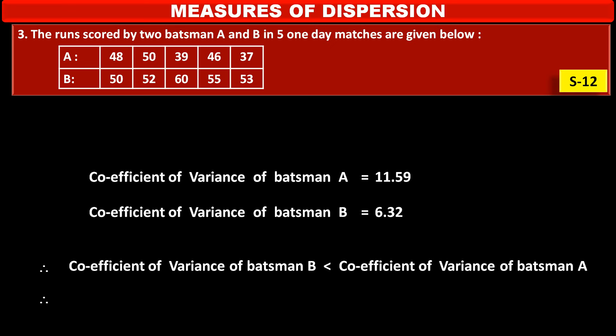Therefore, batsman B is more consistent because its coefficient of variance is smaller than the coefficient of variance of batsman A.